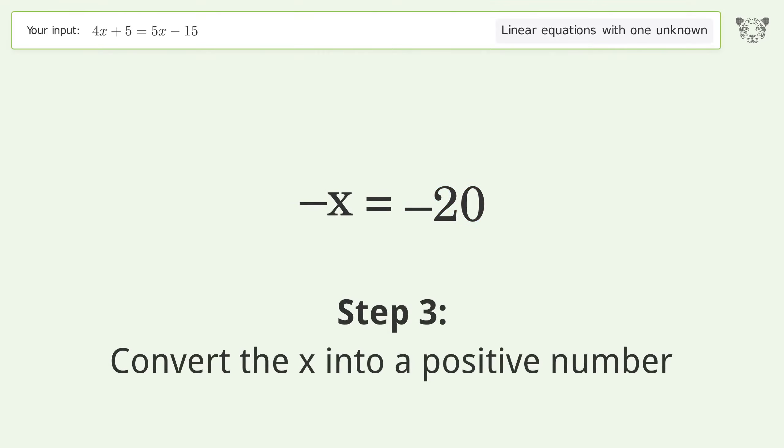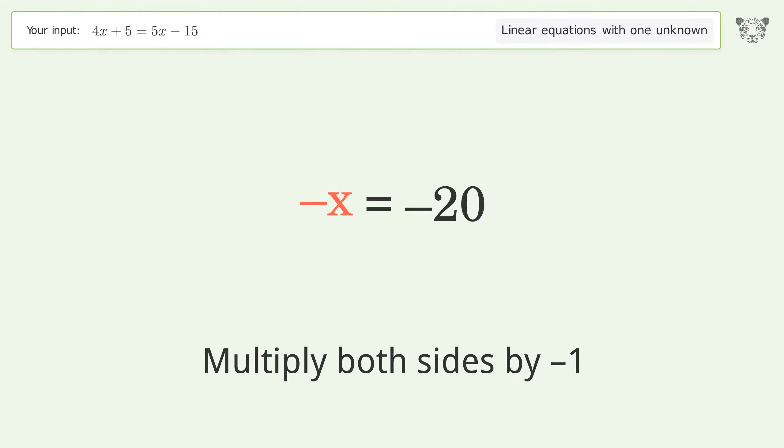Convert the x into a positive number. Multiply both sides by negative 1. Remove the ones.